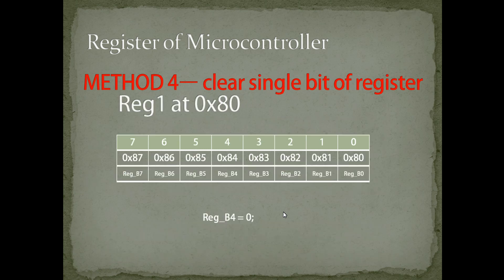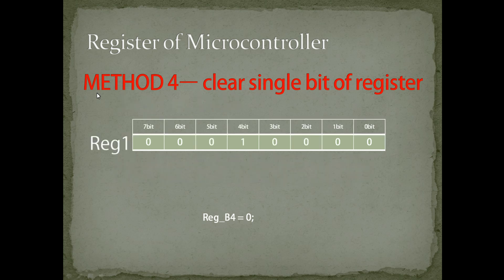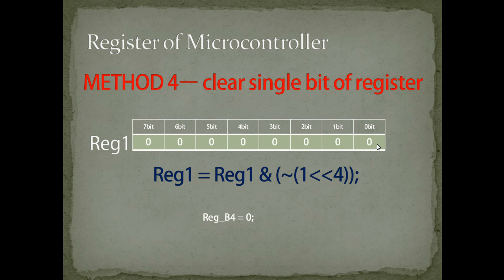Method 4 is used for clearing a single bit of a register. We have seen how to set individual bits in Method 3; now we see how to clear a bit. To clear bit 4 of register 1 without disturbing the other bits, the statement is: reg1 = reg1 & ~(1 << 4).